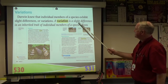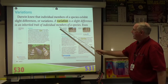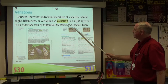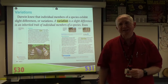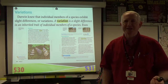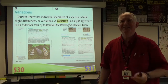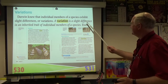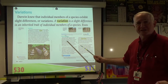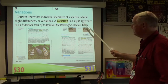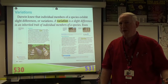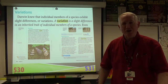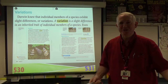Variation is a slight difference in an inherited trait in an individual member of a species. And sometimes that slight difference gives you an advantage. For instance, the longer neck — on that island, those tortoises were able to survive better. More of them were able to reproduce, and all of their little baby tortoises look just like that.